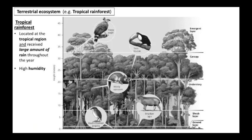The second ecosystem structure that you need to know is the terrestrial ecosystem. And we are going to learn tropical rainforest. What is a tropical rainforest? From its name, you can tell tropical because it is located at the tropical region. Rain, that's why it receives a large amount of rain throughout the year. And that makes it to have high humidity.